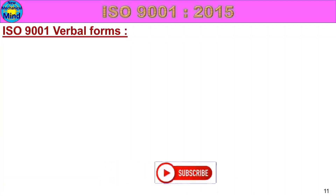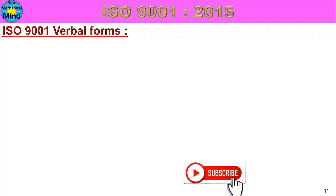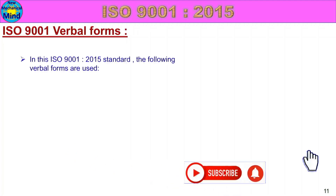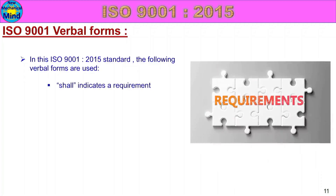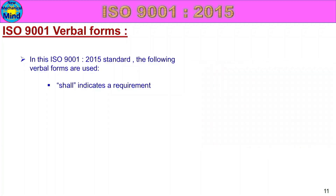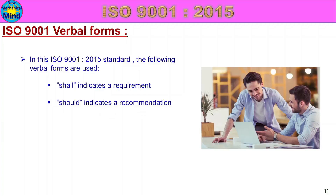First, ISO 9001 Verbal Forms. In this ISO 9001 QMS standard, the following verbal forms are used. 'Shall' indicates a requirement. If you want to follow up, you will be able to improve the quality management system.